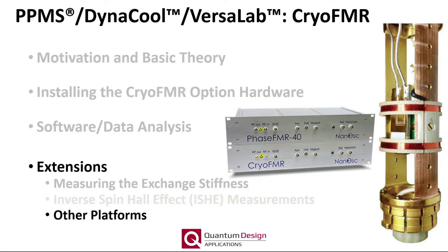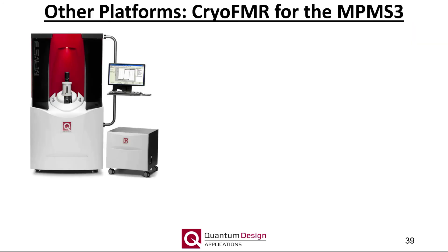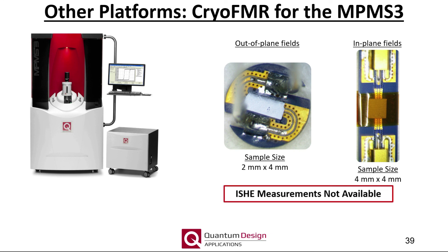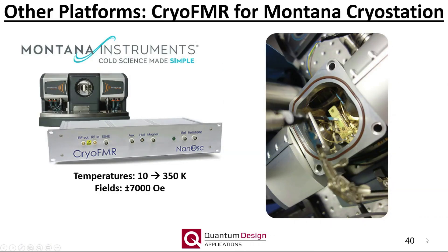Moving on to other platforms compatible with the spectrometers offered by Nanosk. Cryo-FMR measurements can be performed within the much smaller diameter sample chamber of the MPMS-3 by special coplanar waveguides. Both in-plane and out-of-plane measurements are possible. Note, for out-of-plane measurements the maximum sample size is about 2 mm by 4 mm. A further restriction is in regards to inverse spin Hall effect measurements, which are not possible with the cryo-FMR probe available for the MPMS-3. Measurements can be performed over the same temperature range as that for the PPMS product line and up to 7 Tesla. Continuing on with cryo-FMR, the Montana Cryo Station can also perform FMR measurements for in- and out-of-plane fields. The temperature range is 10 to 350 Kelvin at fields up to 7,000 Oersted. Also note the cryo-FMR instrument can also be integrated into other magneto cryostats on the market. If you're interested, please contact your local Quantum Design office for more information.